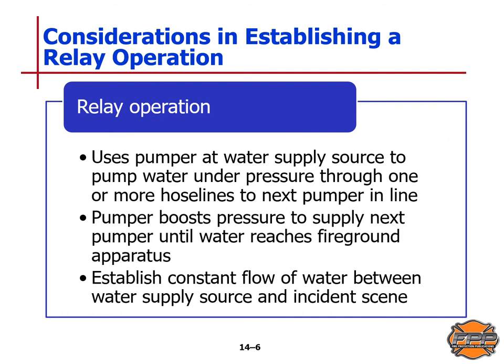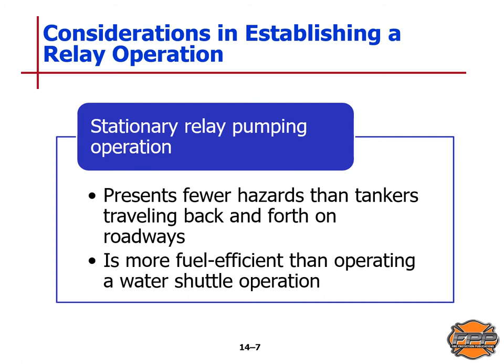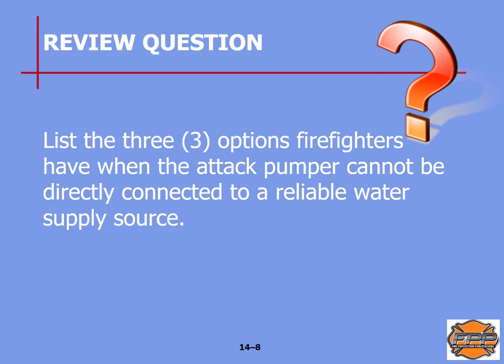For relay operation, this involves use of a pumper at a water supply source to pump water under pressure through one or more hose lines to the next pumper in line. Each pumper boosts the pressure to supply the next pumper until water reaches the fire ground apparatus. This helps establish a constant flow of water between the water supply source and the incident scene. A stationary relay pumping operation presents fewer hazards than tankers traveling back and forth on roadways and is more fuel efficient than a water shuttle operation. Review question: list three options that firefighters have when the attack pumper cannot be directly connected to a reliable water supply source — page 431 of your manual.